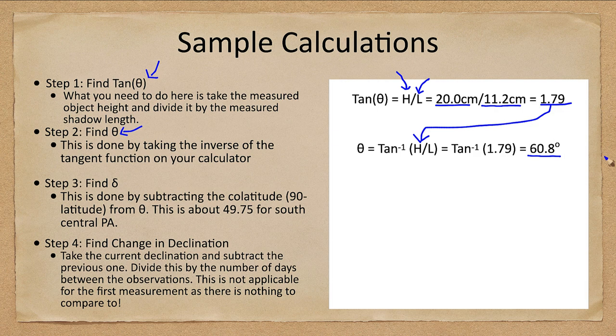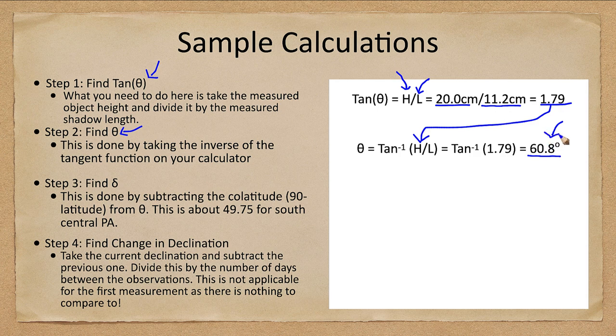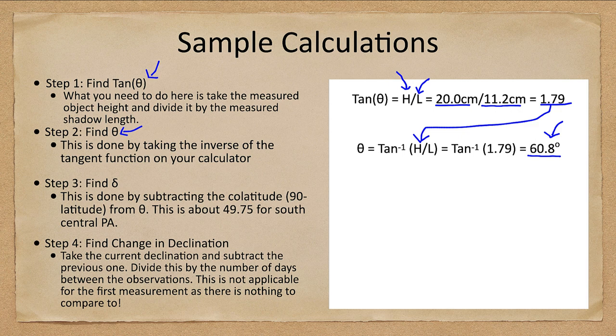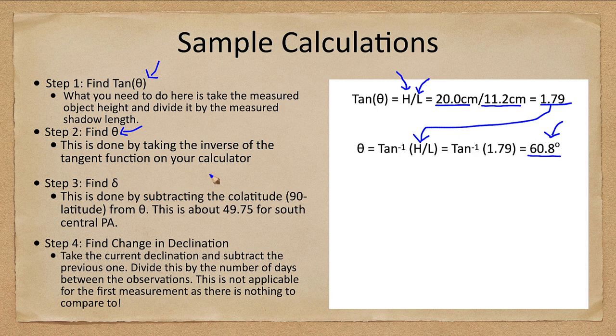Now you do have to watch - if you are using a graphing calculator, you have to make sure it is set in degree mode. They tend to default to radians, which for mathematical measurements of angles is another way of measuring angles. In order to get the correct numbers here, you will need to set that to degrees. So now we have the altitude of the sun, so on this day at local noon, the sun was about 60.8 degrees above the horizon.